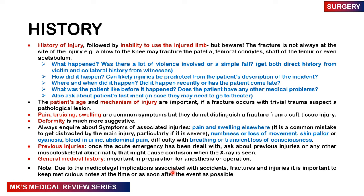Inspect each and every part of the bone. Ask what happened, how much violence was involved, and get both a direct history from the victim and a collateral history from a witness. Ask how it happened — from the description you can often predict the type of fracture. Ask where and when it happened, whether it's recent or the patient came late, the patient's prior state, other medical problems, and the last meal as they may need theater. Ask about age and mechanism of injury — trivial injury causing a fracture should raise suspicion of a pathological lesion.